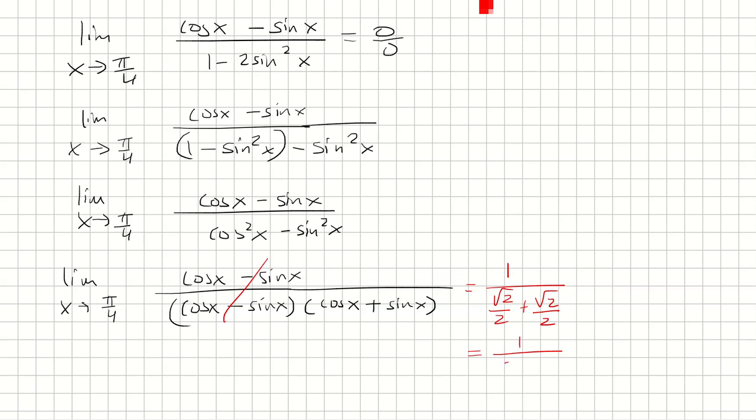So this will be 1/(2·√2/2). The 2s cancel, so we're left with 1/√2, or √2/2.